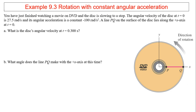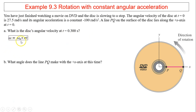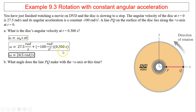Let's take a look at the first example. You have just finished watching a movie on DVD and the disk is slowing to a stop. The angular velocity of the disk at t equals zero is 27.5 radians per second, and its angular acceleration is a constant negative 100 radians per second squared. Write down what is given: 27.5 rad/s is the initial angular velocity, negative 100 rad/s² is alpha, and time is given. Use those three quantities. To find omega, use omega equals omega_naught plus alpha t. Substituting gives omega equals 24.5 radians per second.